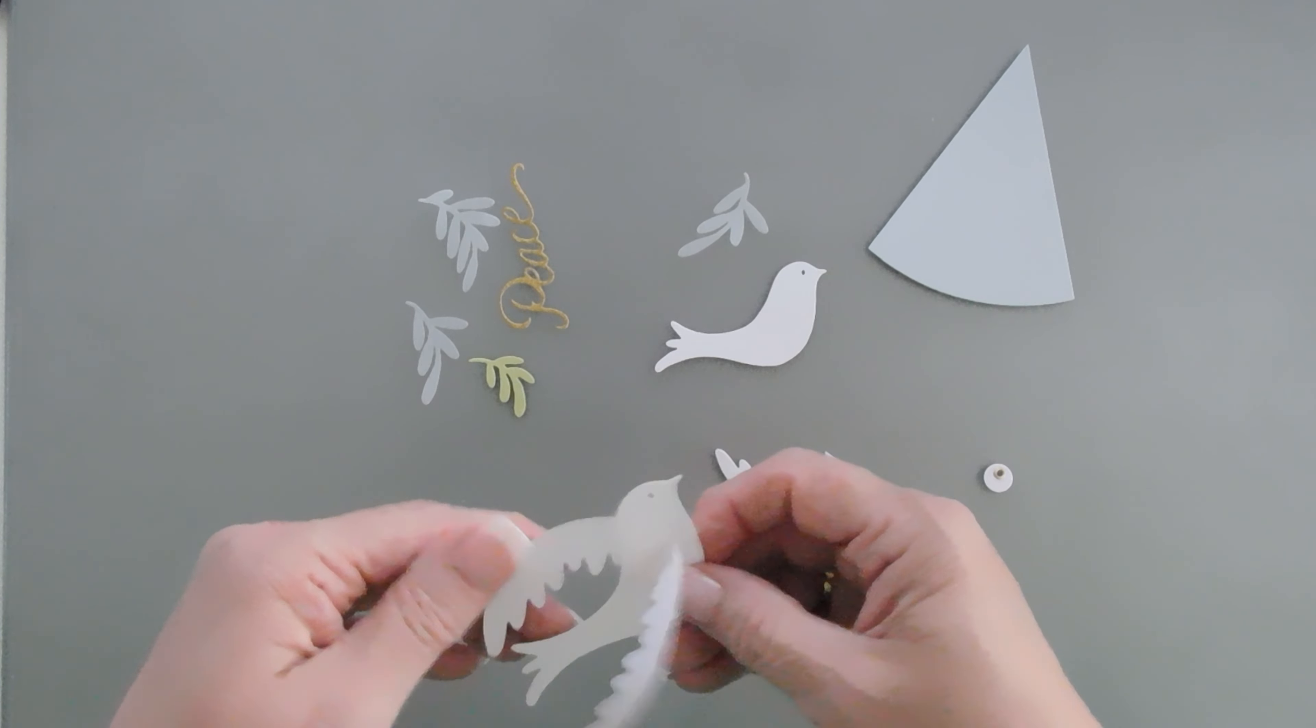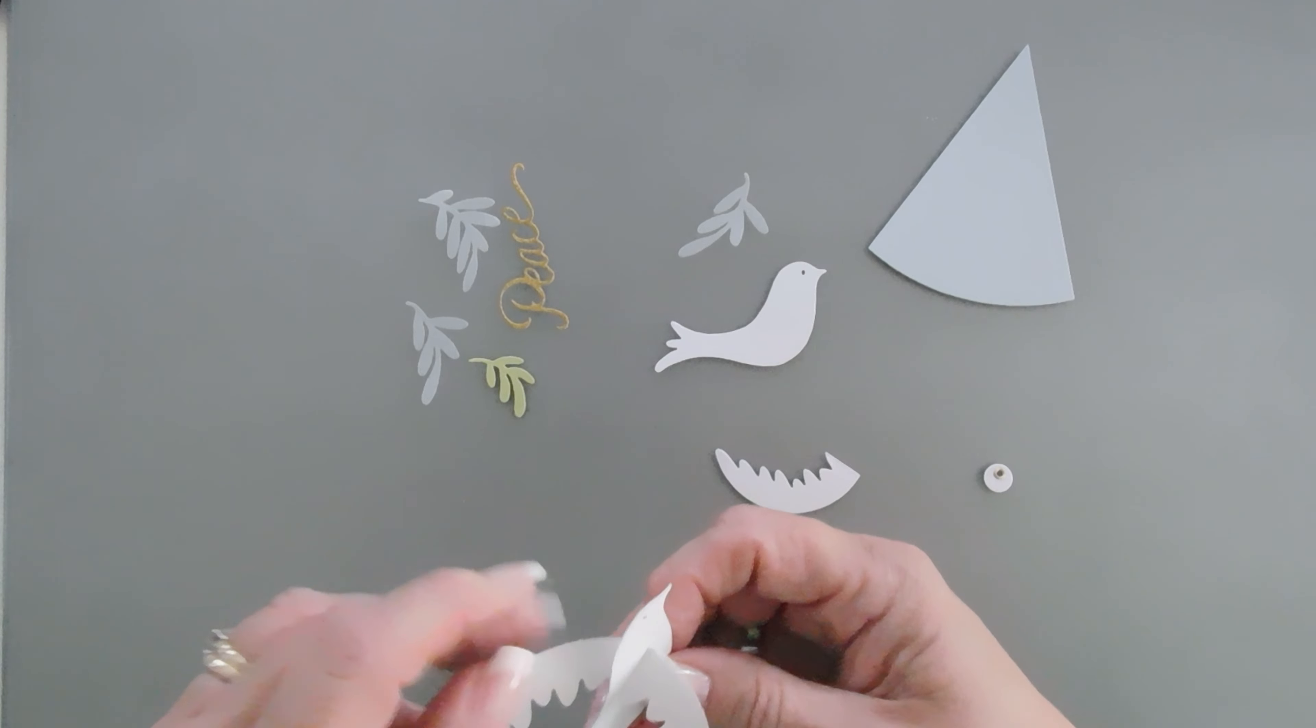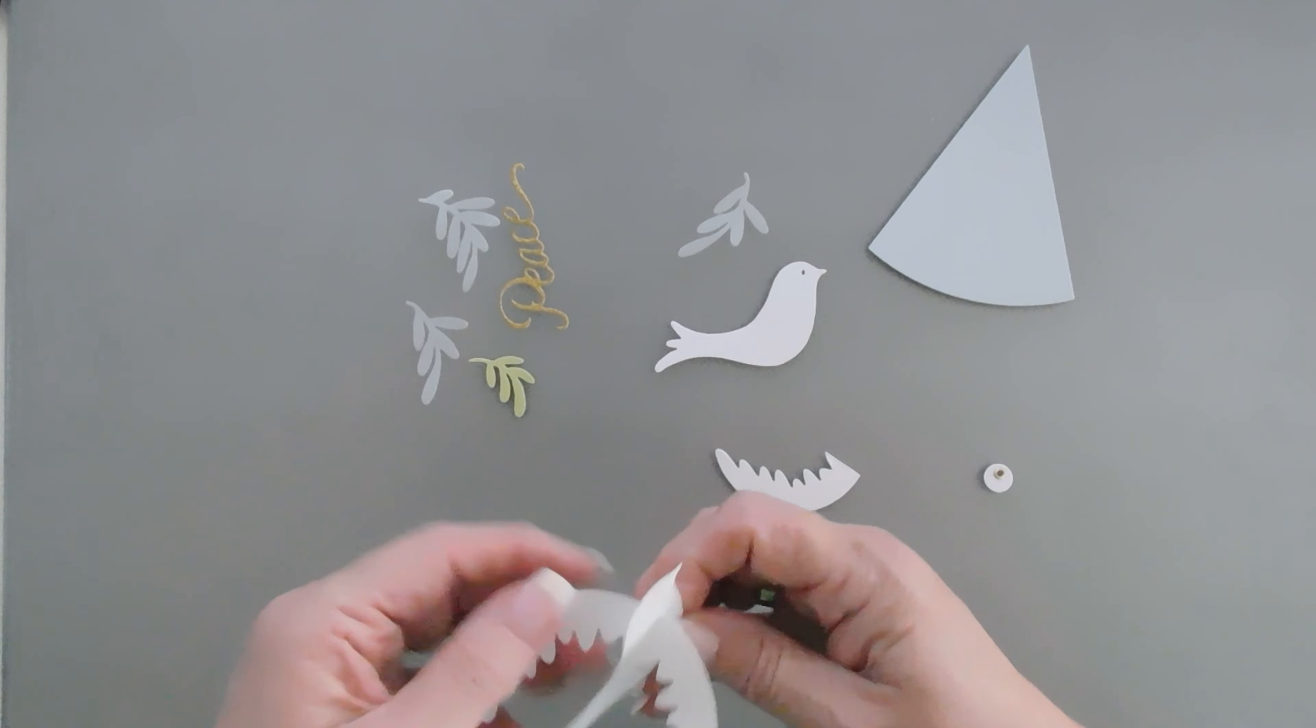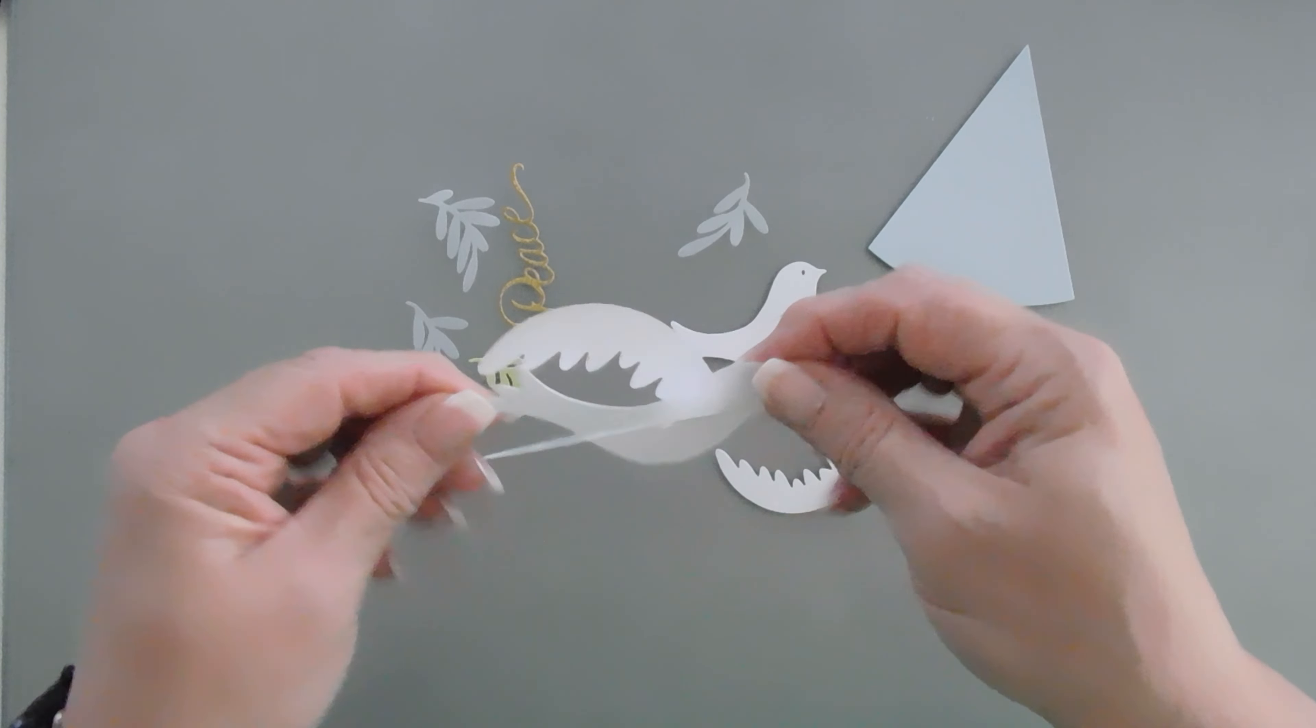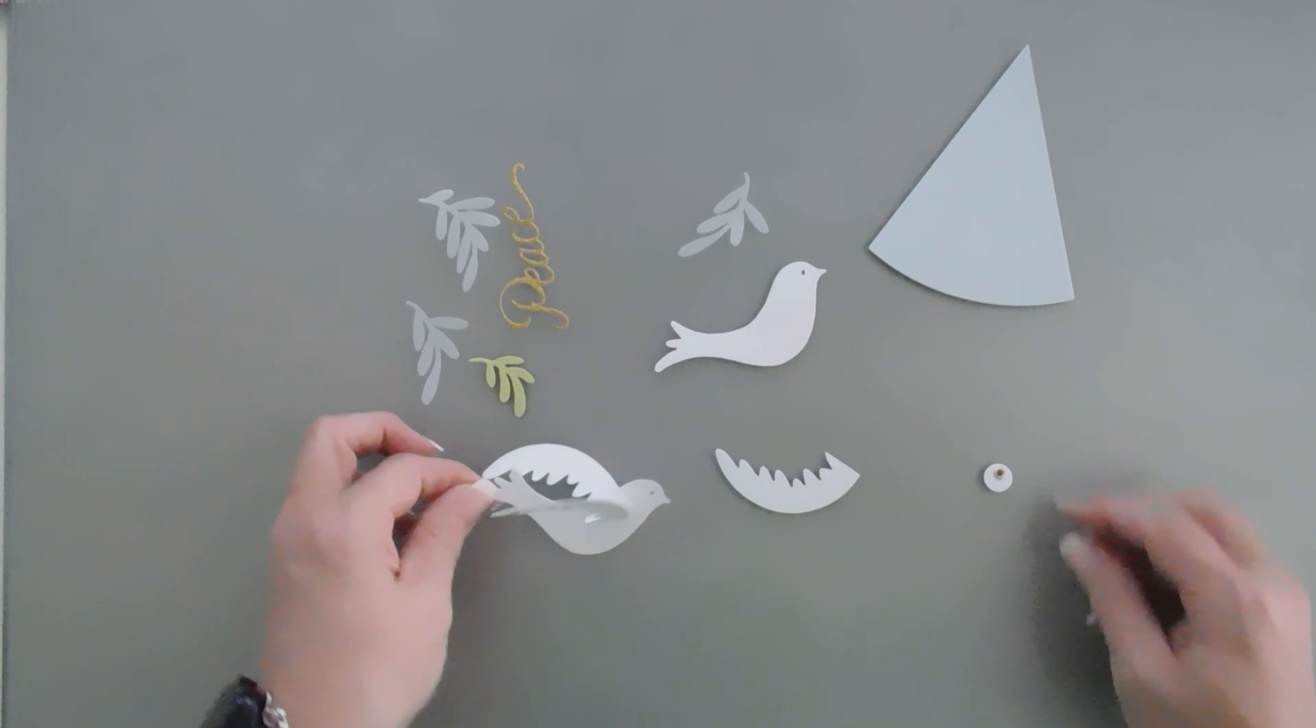And then I'm also going to be bringing in the Season of Wonder Sentiment Stamp Set. The die set has peace, so we'll use the peace on the outside of our card. But for the inside, this is going to be a great stamp set for that because all the greetings are a little bit more hearty, I would say, and go perfect on the inside of cards. So we'll be using this.